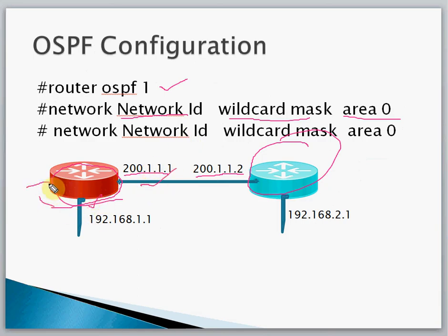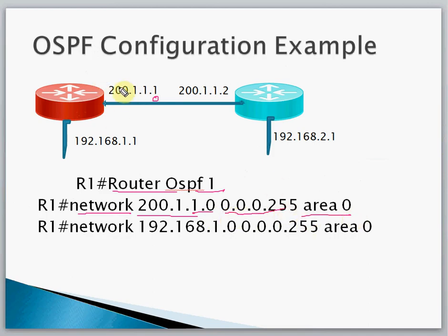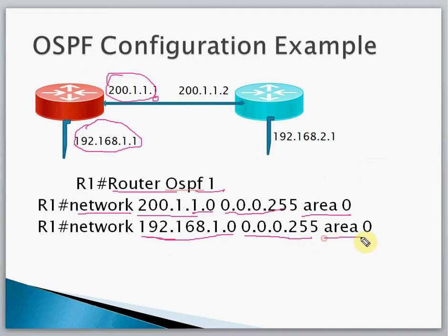If we have more ports, we add additional network statements with the network ID and wildcard mask for each. For example, for Router 1 we write 'router ospf 1', then 'network 200.1.1.0' with wildcard mask and 'area 0', and also 'network 192.168.1.0' with wildcard mask and 'area 0'.